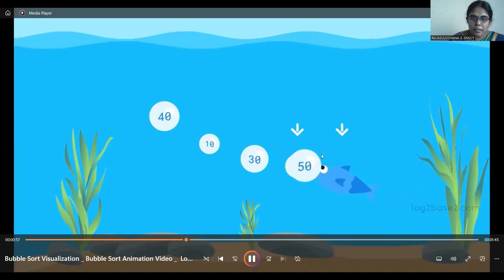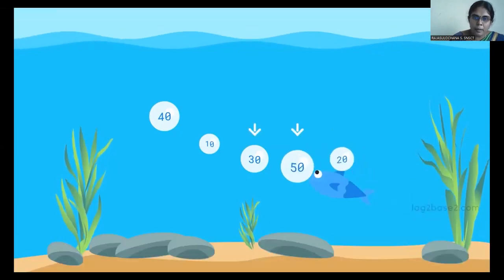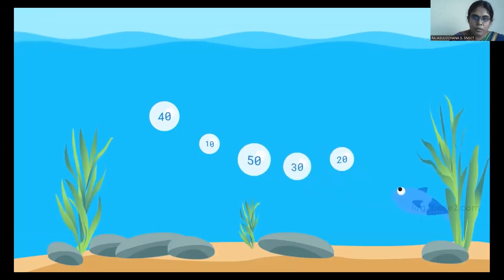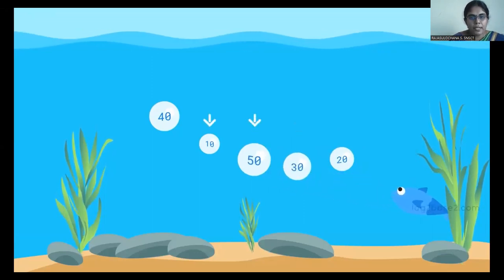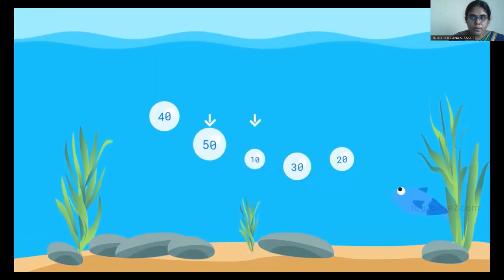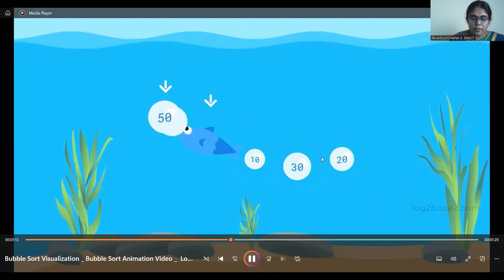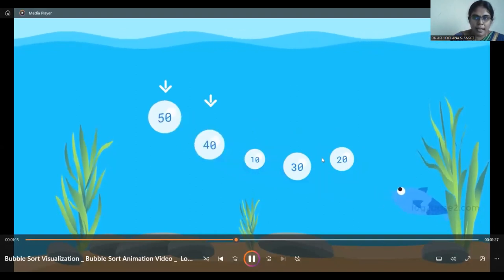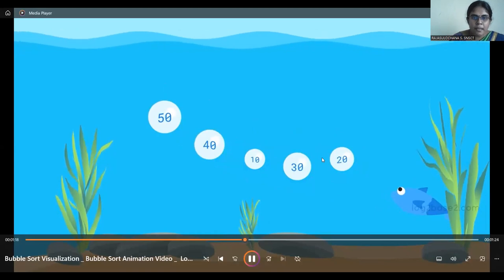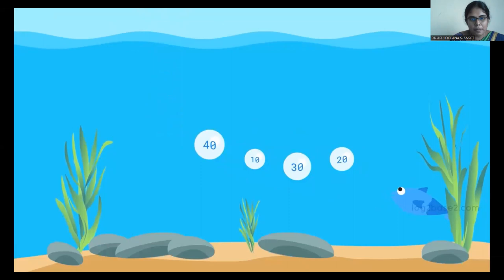Now compare 50 and 20 — 50 is greater than 20, so 50 is moved to the first position. Compare 50 and 30 — again 50 is greater, so it is moved to the first position. Compare 50 and 10 — 50 is greater, so 50 is moved to the first position. Compare 50 and 40 — again 50 is greater, so 50 is moved to the last position and is bubbled up. Since this is the largest value or the largest bubble, it is bubbled up.